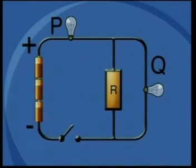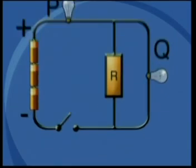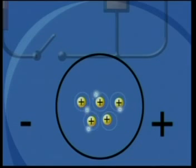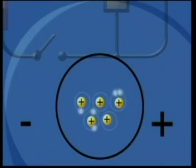Now let's go back to our model and see exactly what is happening as charge moves around the circuit. The switch is in the open position — there is no current passing through the circuit. Look at what is happening inside this length of connecting wire. The moving charges are electrons. They are able to move freely from atom to atom inside the metal, but notice that they move randomly in all directions. There is no current in this conductor.